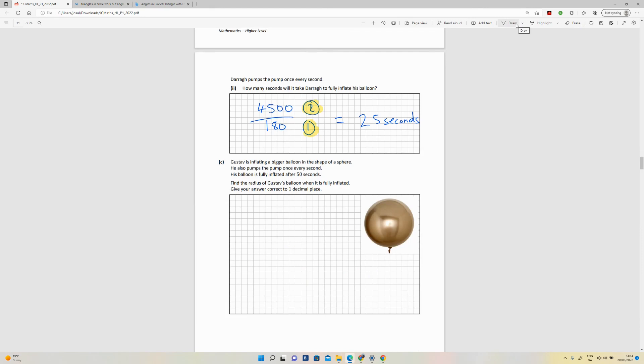Part C. Gustav is inflating a bigger balloon in the shape of a sphere. He also pumps the pump every one second. His balloon is fully inflated after 50 seconds. Dara's was fully inflated after 25 seconds. We have to assume that he's using the same pump. Find the radius of Gustav's balloon when it's fully inflated. Give your answer to one decimal place.